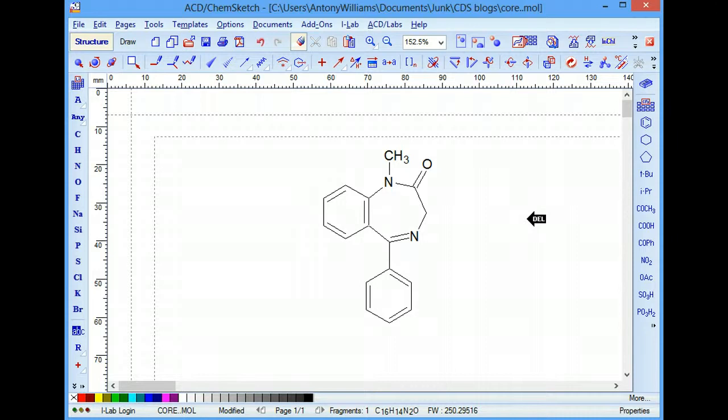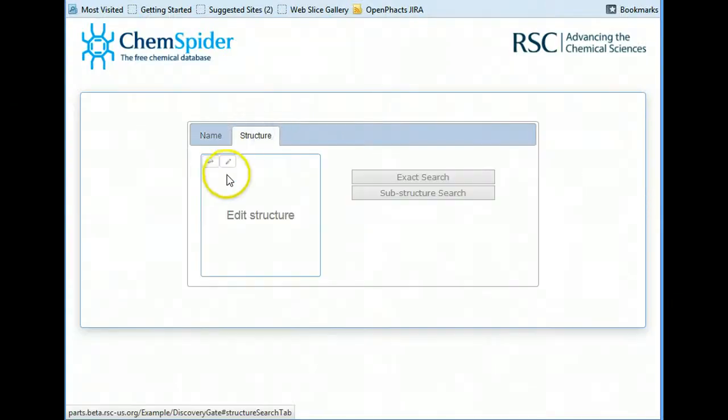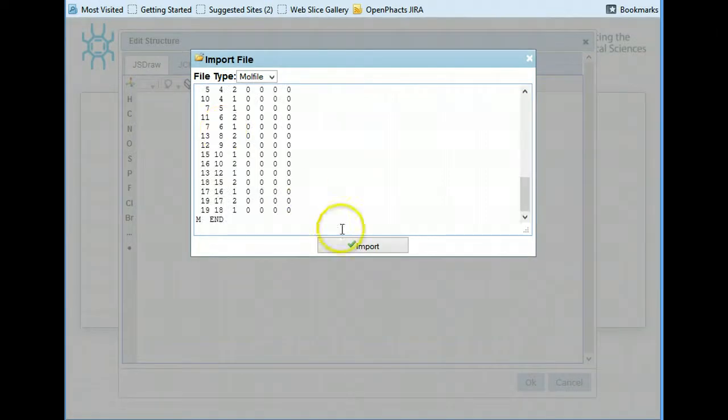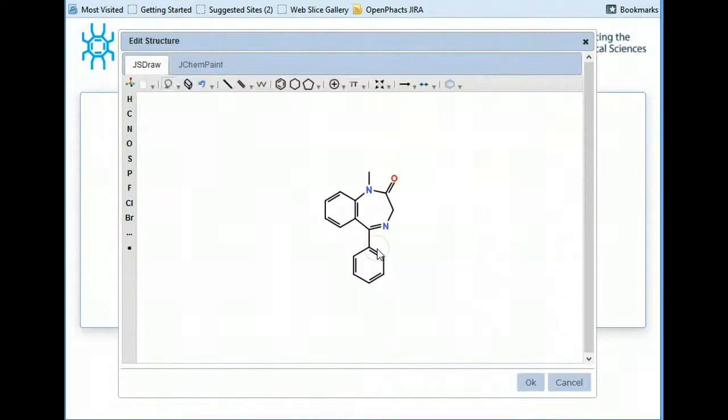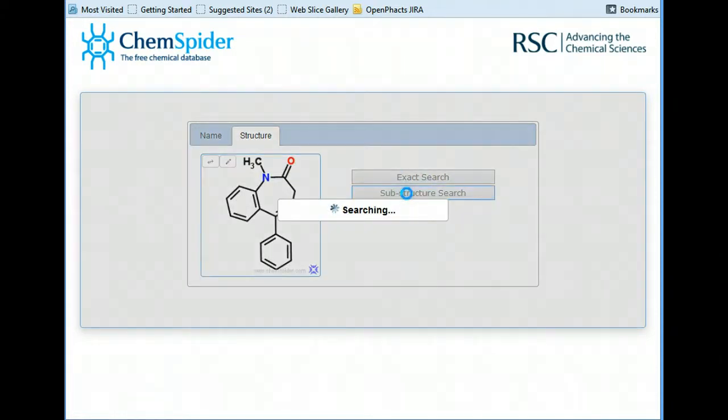In this case, I'm working in the ACD ChemSketch interface. I've drawn the compound, I've taken the substructure, and I'm going to insert it into the interface. In this case, there are two drawing editors presently available, jchempaint and jsdraw. In jsdraw, I simply paste the mol file. And there's the substructure, and now we want to do a substructure search of that particular moiety across the ACD.